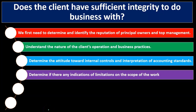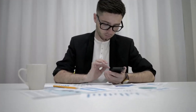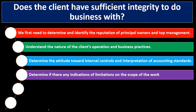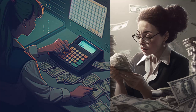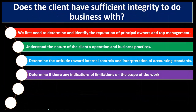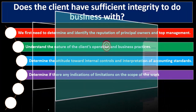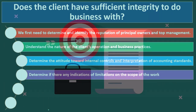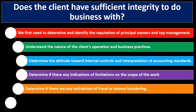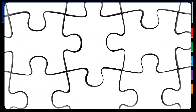We should also determine if there are any indications of limitations on the scope of the work. For example, if a client says we cannot audit a particular department, that's a scope limitation we need to identify upfront. We should also determine if there are any indications of fraud or money laundering — if we detect possible illegal activity, that speaks to the client's integrity and we probably would not take on the engagement.